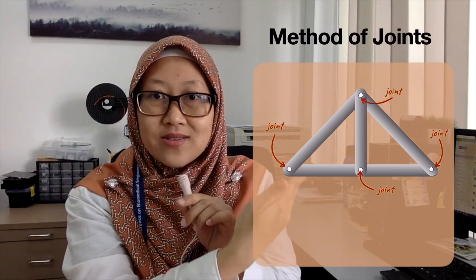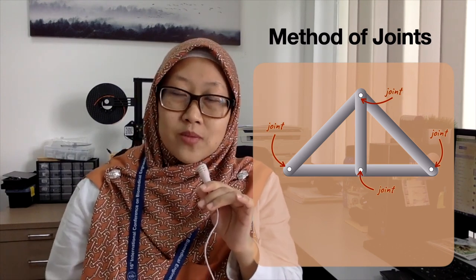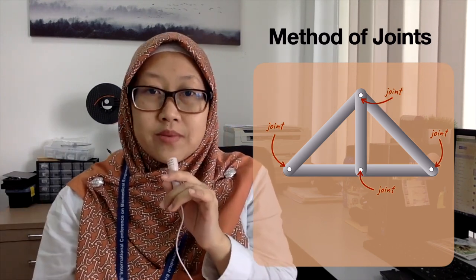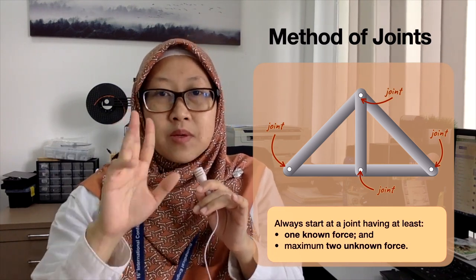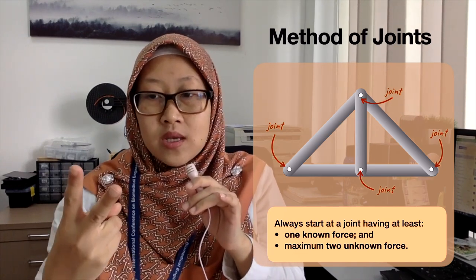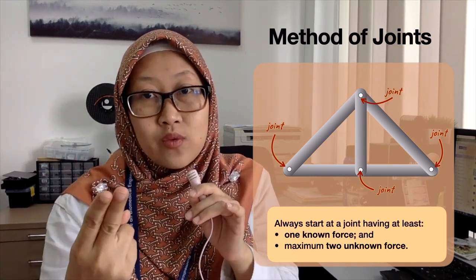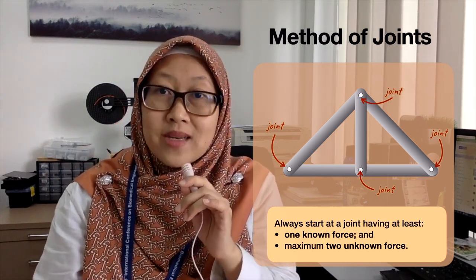In this subject we are interested in how to perform mechanical analysis on a truss structure. One of the analysis methods is what we call the method of joints. The analysis begins at the joints of the truss. When there are multiple joints, you should always start at a point where there is at least one known force and a maximum of only two unknown forces, so you only have to form two simultaneous equations, making it much simpler.